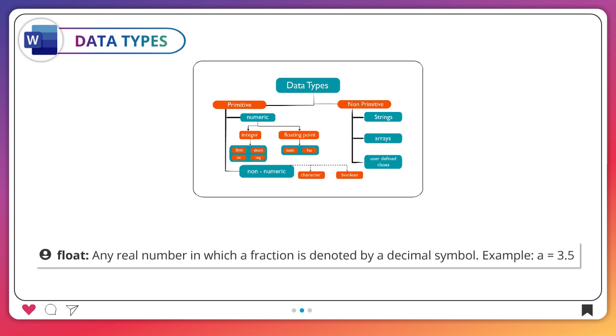Any real number in which a fraction is denoted by a decimal symbol. Example: a = 3.5.